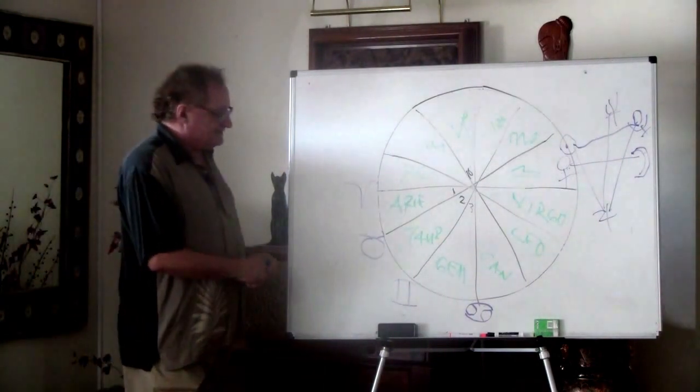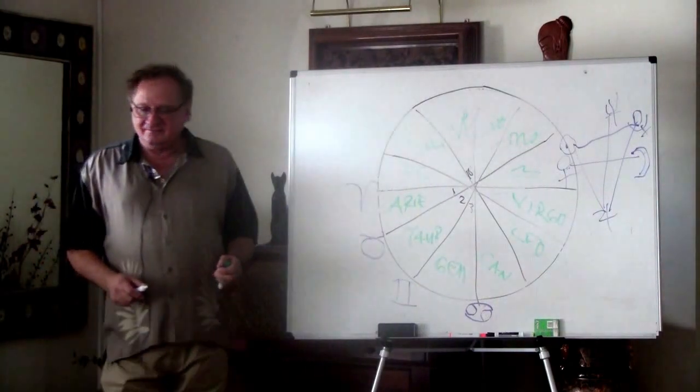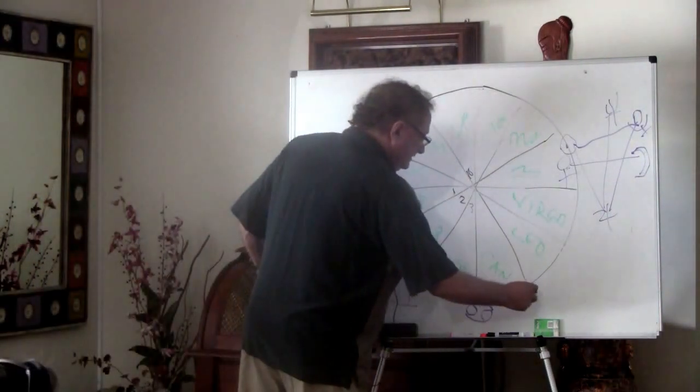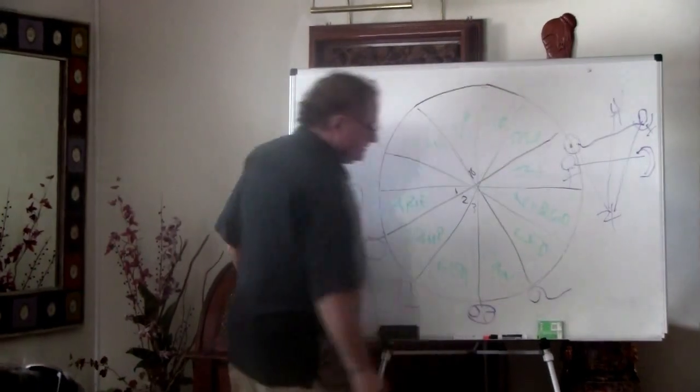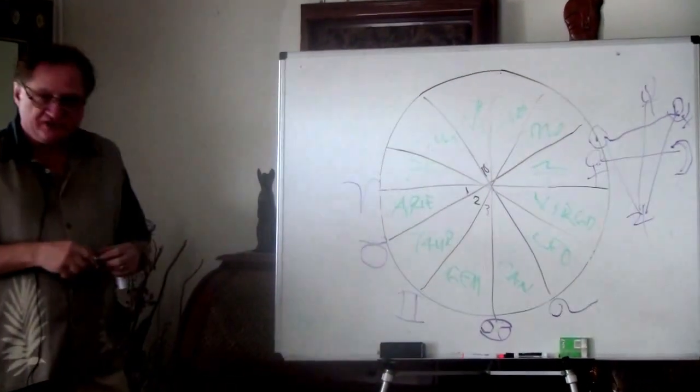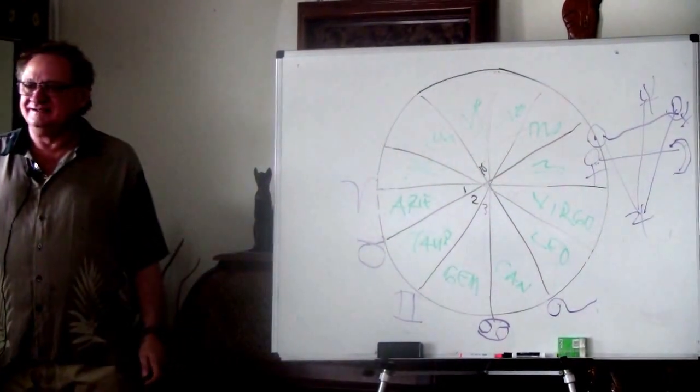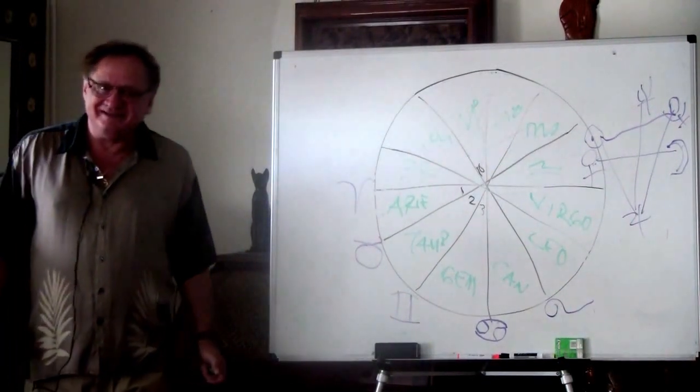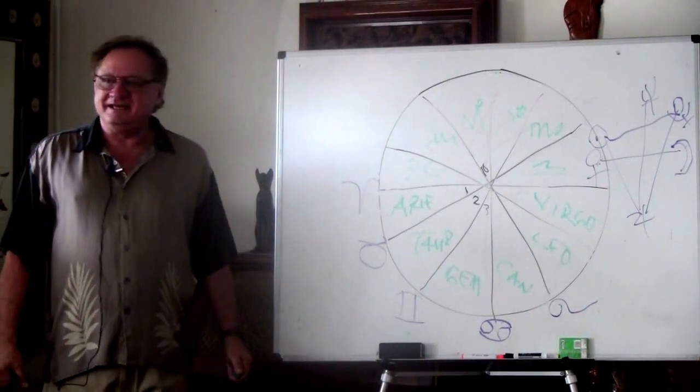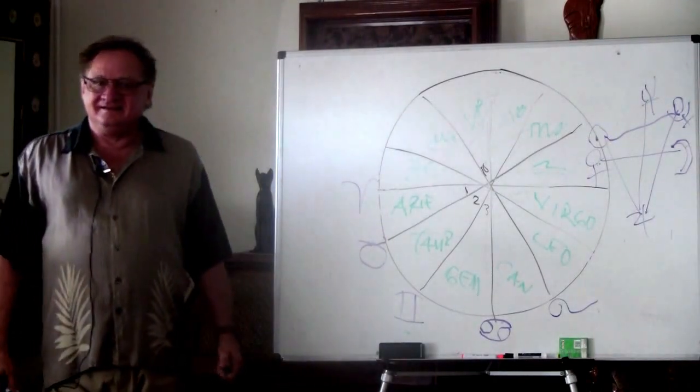And the next sign is Leo. Anybody have trouble with that one? Leo? Look at Leo. Leo looks like this. And guess what Leo rules, your children. And guess what that looks like. A sperm. Isn't it amazing, these symbols? Who made these things up?